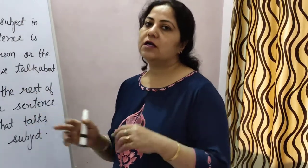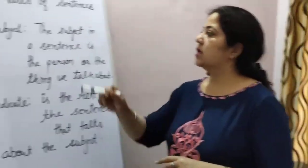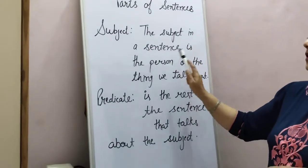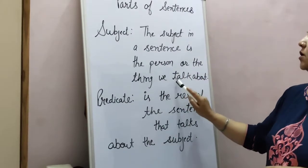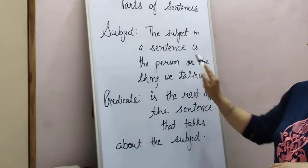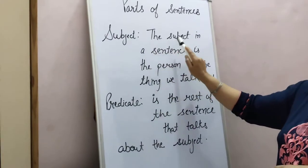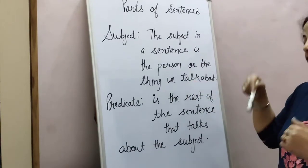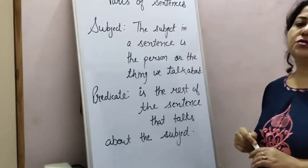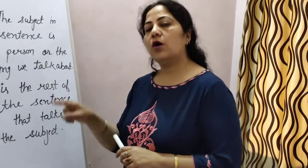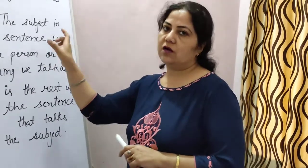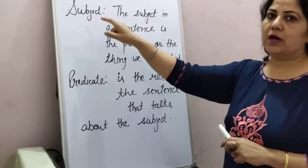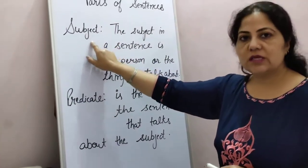There are two parts of each and every sentence. First, we talk about subject. The subject in our sentence is the person or the thing we talk about. In another word, you can say the noun or pronoun based part of our sentence is called subject.